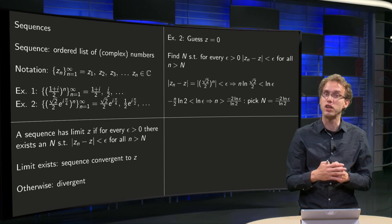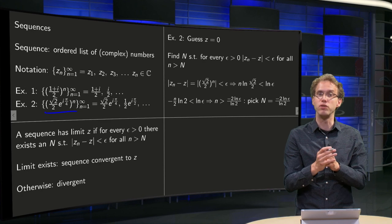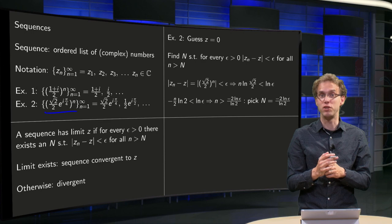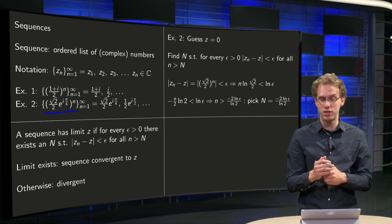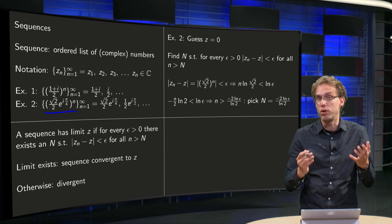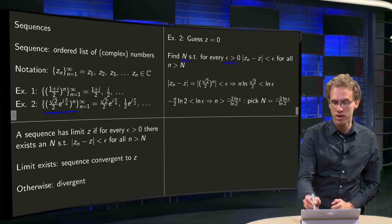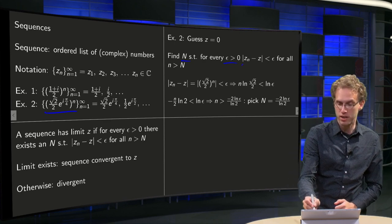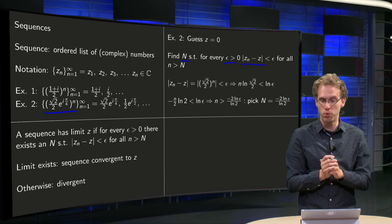Let's do an example. Let's take a look at example 2. You have some (√2/2)^n which becomes smaller and smaller, so we expect a limit of the sequence to be zero because the norm of the numbers gets smaller and smaller. So how do we prove that? Well then we have to find a capital N such that for every ε > 0, the norm of z_n minus this limit gets smaller than this ε.